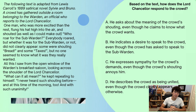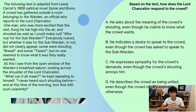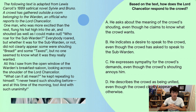So let's try to get some practice in. The following text is adapted from Lewis Carroll's 1889 satirical novel Sylvia and Bruno. A crowd has gathered outside a room belonging to the warden, an official who reports to the Lord Chancellor. One man, who was more excited than the rest, flung his hat high into the air and shouted, as well as I could make out, 'Who roared for the subwarden?' Everybody roared, but whether it was for the subwarden or not, did not clearly appear. Some were shouting 'bread' and some 'taxes,' but no one seemed to know what it was they really wanted.